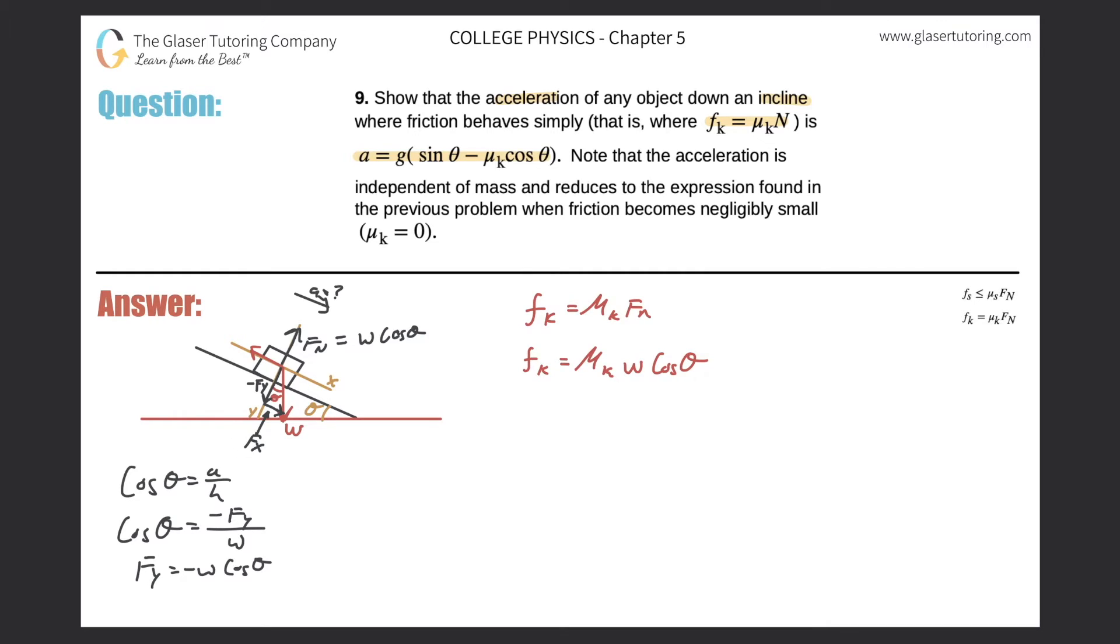Just remember that f_x, just to reiterate, we would use sine to solve that from the component vector of the weight. So we'd have sine of theta equals opposite over hypotenuse, so the sine of that angle is equal to f_x all over W. So f_x is equal to W sine theta. So now here are the two forces.